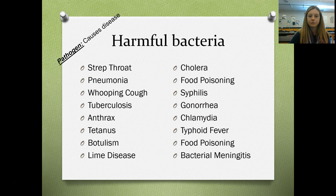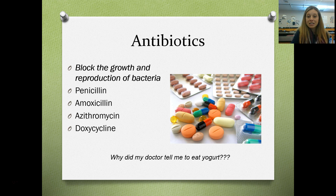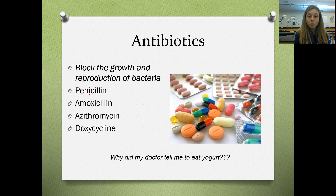A pathogen is anything that causes disease. Some pathogenic bacteria are ones you're familiar with — pick a couple to write on your list. If you have a bacterial infection, your doctor will prescribe an antibiotic, which treats bacterial infections by blocking the growth and reproduction of bacteria. Common antibiotics include penicillin, amoxicillin, azithromycin — a Z-Pak — and doxycycline. Your doctor will tell you to eat yogurt while taking antibiotics because they kill good and bad bacteria; yogurt is full of probiotics, which are good bacteria that replace what the antibiotics have killed.